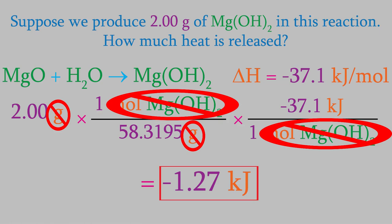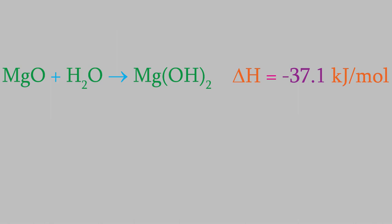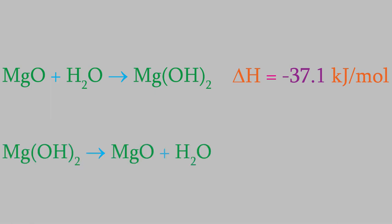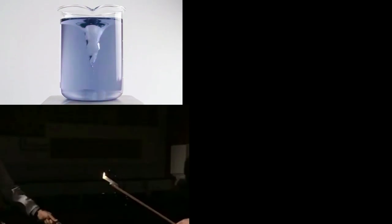There's another important thing to know about reaction enthalpies. If we run this reaction in reverse — starting with magnesium hydroxide and producing magnesium oxide and water — the enthalpy would be positive 37.1 kilojoules per mole, making it endothermic instead of exothermic. The enthalpy is the same number as the forward reaction, just with the sign changed. Knowing this allows us to find the enthalpies of thousands of new reactions.